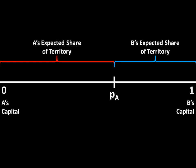Now, if the states were to fight a war, the expected territory would look like this. On average, A would receive everything between zero and PA. And B would receive one minus PA, which is that amount of territory. Keep in mind that when the states actually do fight a war, A will receive either all of it or nothing, and B will receive either all of it or nothing. But when you average out those outcomes times the probability of war, that's the expected share for A and the expected share for B.